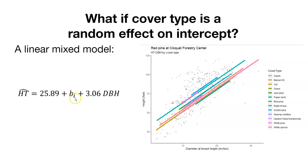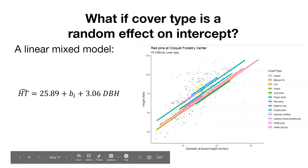Our little b sub i is our random effect. So i here is all the 13 different cover types. Now if we were to plot those on the graph, note that we'll get these different lines representing the different cover types. As you can see, the one that predicts the highest height is this one called scotch pine cover type.